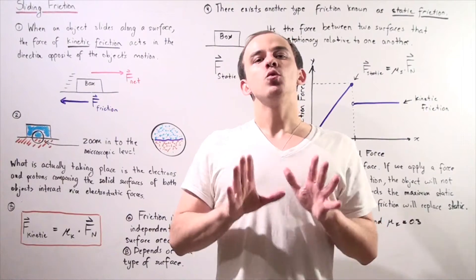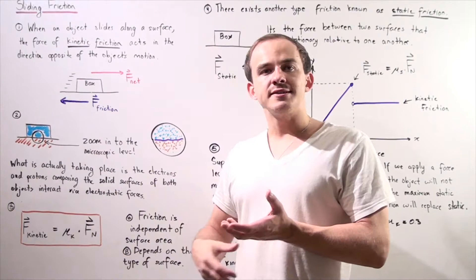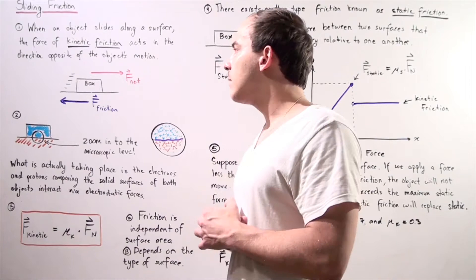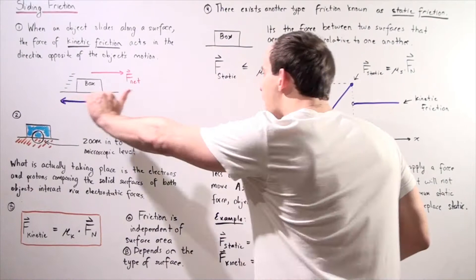So what exactly is sliding friction? Whenever we have an object that is sliding along a surface, the two surfaces will create a force known as kinetic friction that will oppose the motion of our object. For example, let's suppose we have a box that is sliding in the positive direction along our x-axis.